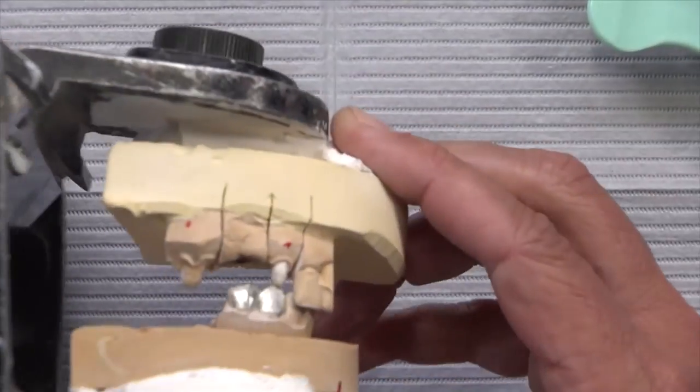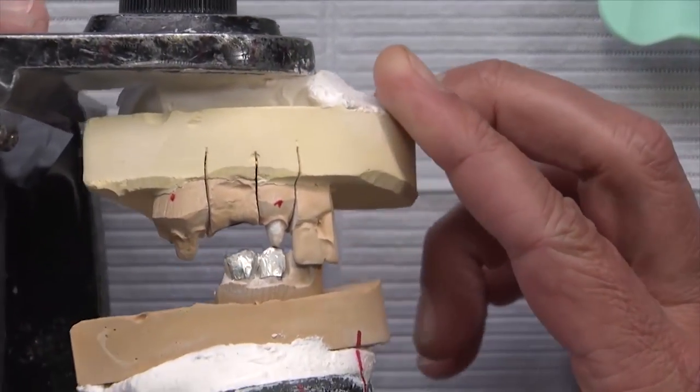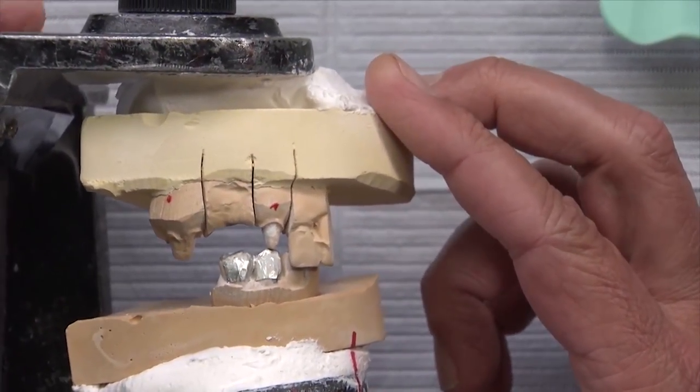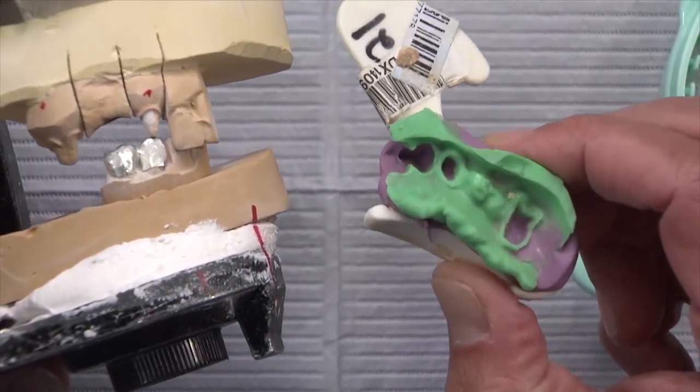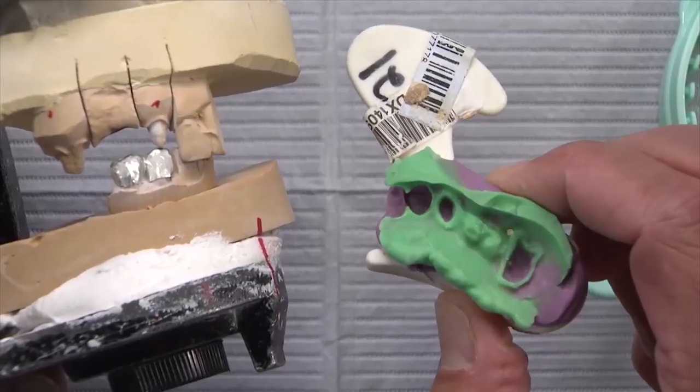we end up with a case like this one where we have the patient bite together. And this is why it came to me was they said, well, look, the prep's hitting the opposing tooth. Can that be happening? And I said, well, it can, but let's hold this up to the light and see if we can see through at the cuspid. And when we hold it up to the light, we can't see any light through there.